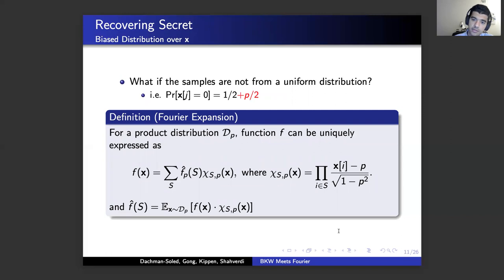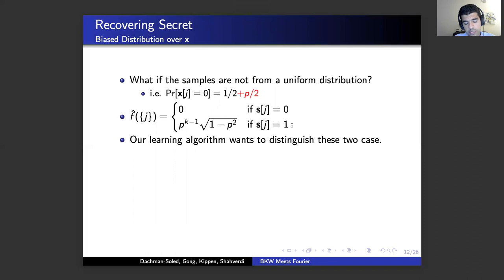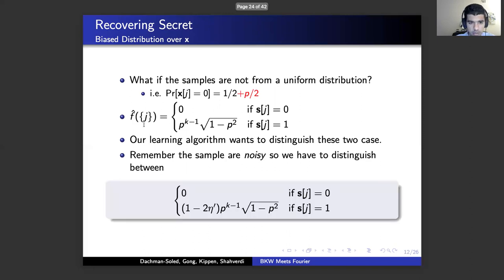What if the samples are not from a uniform distribution? What if X is zero with probability one half plus p? We can define Fourier coefficients in this case as well, by normalizing the chi function and computing the expected value where X is sampled from a biased distribution D(p). It can be shown that the Fourier coefficient of singleton set {j} is zero for coordinates where the secret is zero, and non-zero where the secret key is one. Our learning algorithm wants to distinguish these two cases — distinguishing if the Fourier coefficient at a singleton set is zero or non-zero. Since samples are noisy, we distinguish between zero and something multiplied by the noise rate.